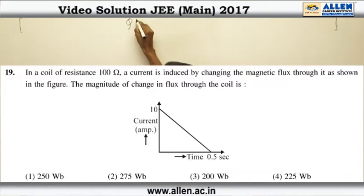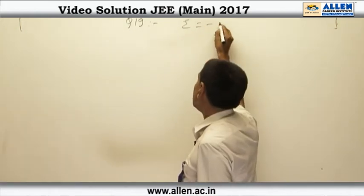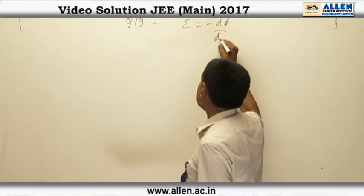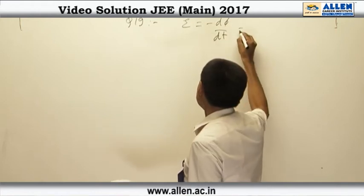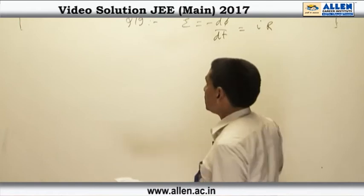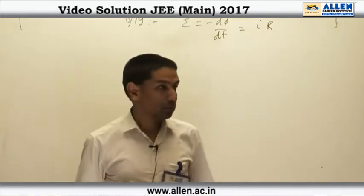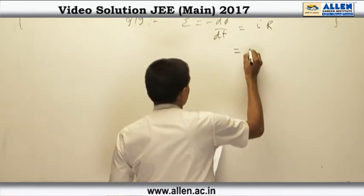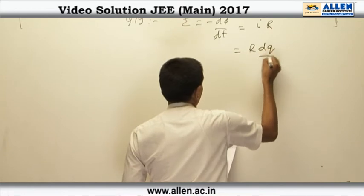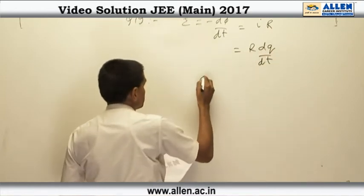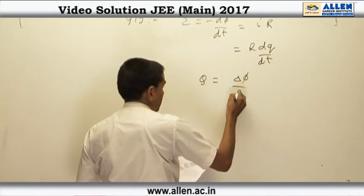Question number 19. According to Faraday's law of electromagnetic induction, the induced EMF is minus dφ by dt. This induced EMF can be said to be current multiplied by the resistance. Now current can be written as dq by dt, and from that we can say the charge flown is equal to Δφ upon R.